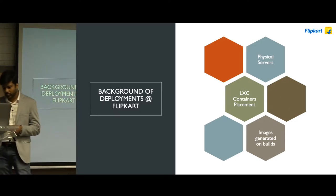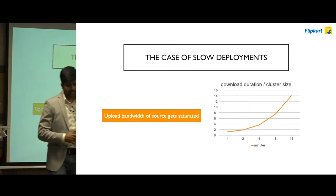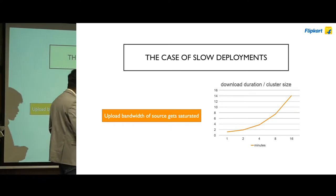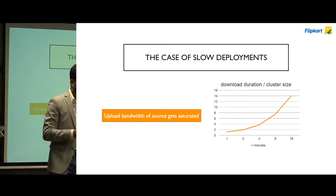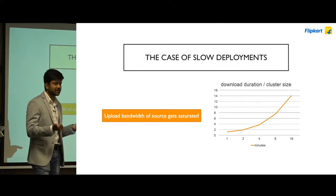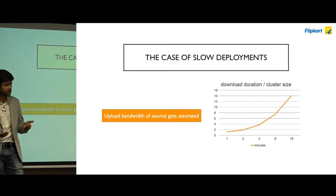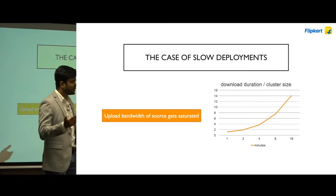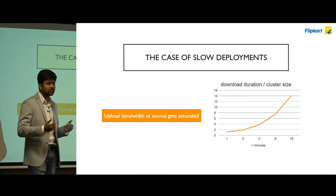The problem we started seeing was that when we started deploying large clusters, our deployment time started to increase linearly. This was essentially because the source where we were storing these images had its upload bandwidth getting saturated. If you have one server with finite bandwidth, and more and more machines are requesting that file at the same point in time, you're going to distribute that upload bandwidth among all the clients — which means the download speed goes lower and lower on every client.